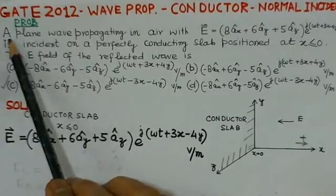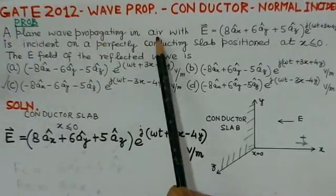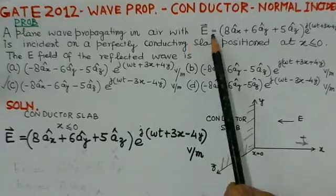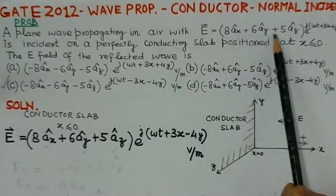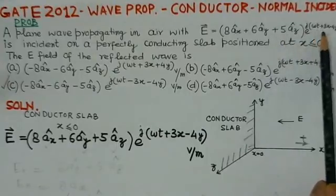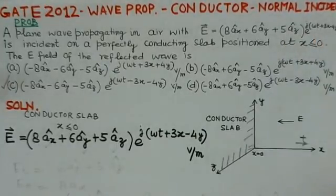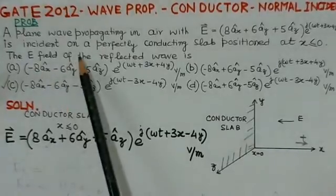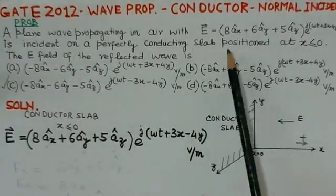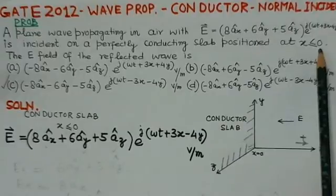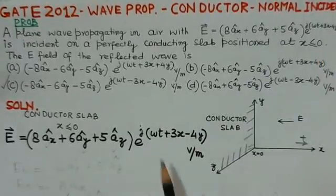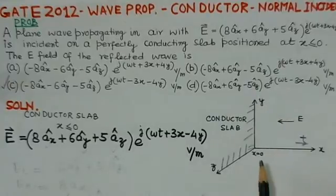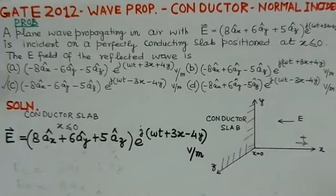The problem states that a plane wave propagating in air with E equal to (8AX + 6AY + 5AZ) times e^(jωT + 3X − 4Y) volts per meter is incident on a perfectly conducting slab positioned at X less than or equal to zero. The field of the reflected wave is to be found from the given four options.